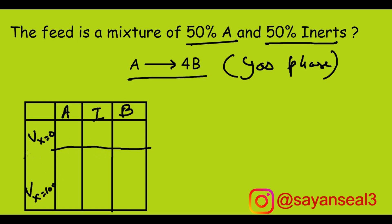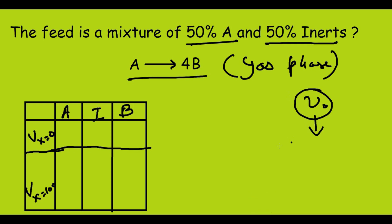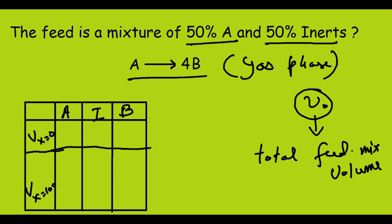We will assume that V₀ is the total initial feed mixture volume. Since 50% of V₀ is A, the volume of A is 0.5V₀. Similarly, 50% is inert, so I is also 0.5V₀. Initially when conversion is zero, there is no B, so B is zero. Taking the summation gives V₀ as the initial total volume.